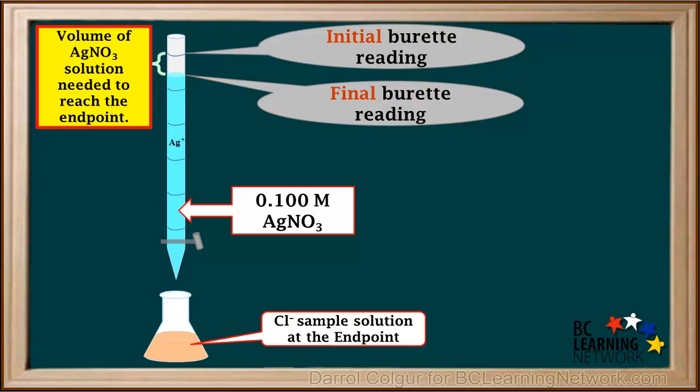The difference between the final burette reading and the initial burette reading will tell us the volume of AgNO3 solution required to reach the endpoint of this titration.